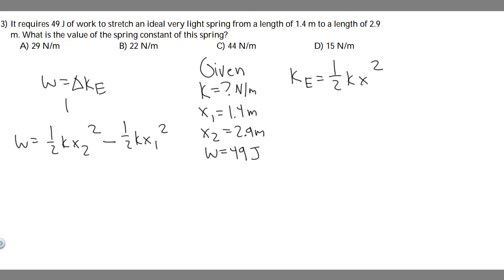So plugging it in, the work is 49 equals 1/2 k times 2.9 squared minus 1/2 k times 1.4 squared.